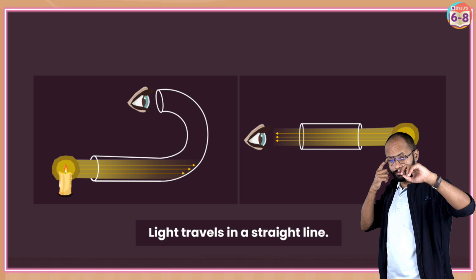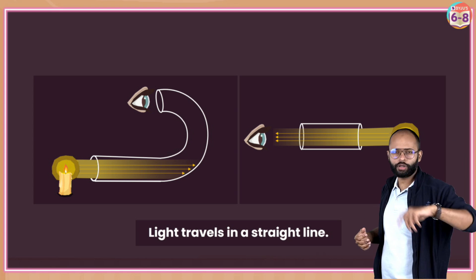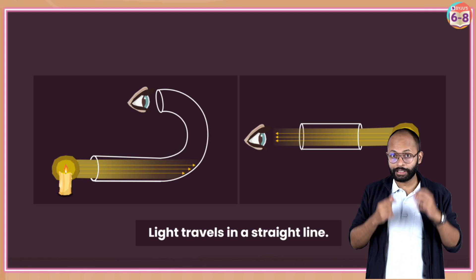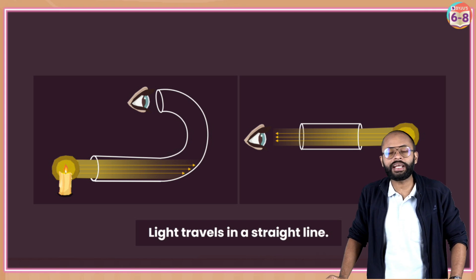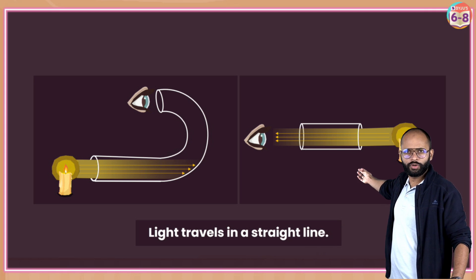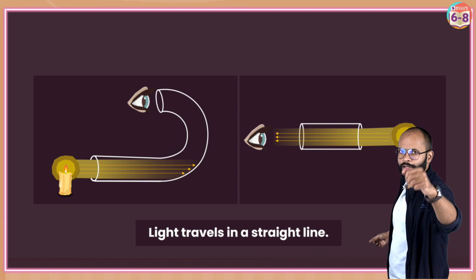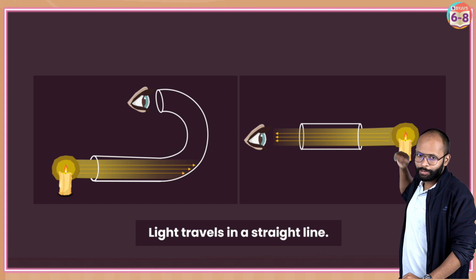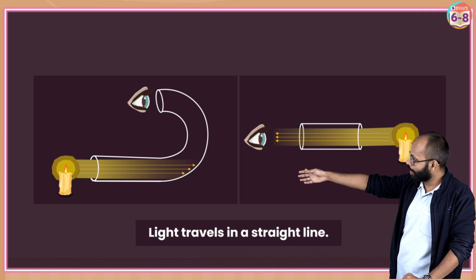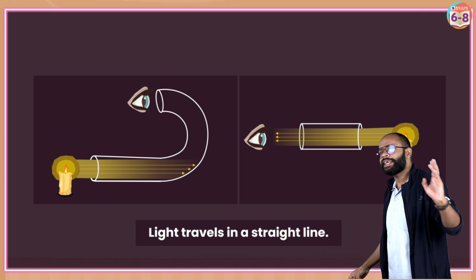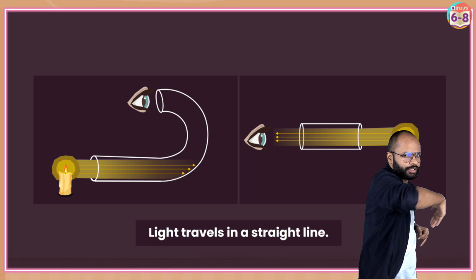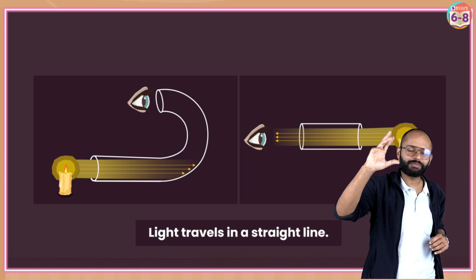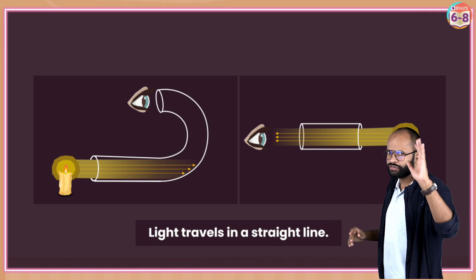In your class, the questions which come are not like define or state. They are like - give me an experiment to prove that light cannot bend, or give a statement to prove that light travels in straight lines. If you take a straight pipe, you can see a candle on the other side. But if you have a pipe which is bent and you have a candle on that side, you cannot see it. Because light travels in a straight line. In the same medium, light travels in a straight line.